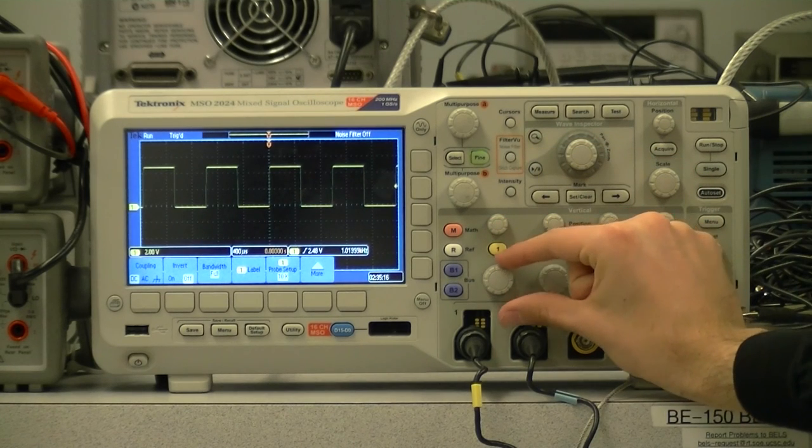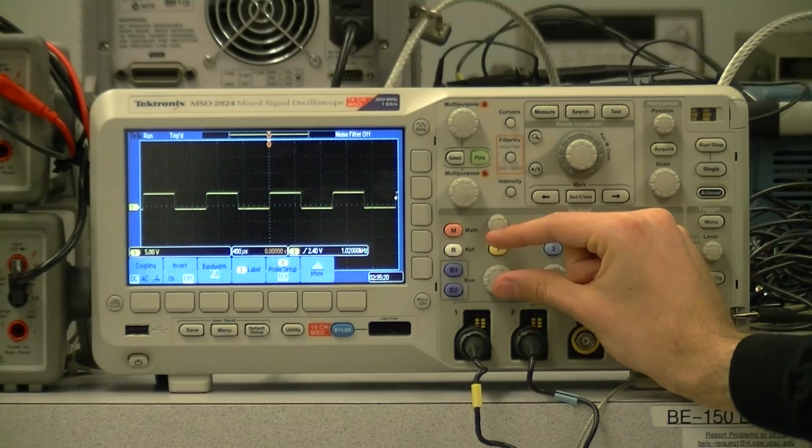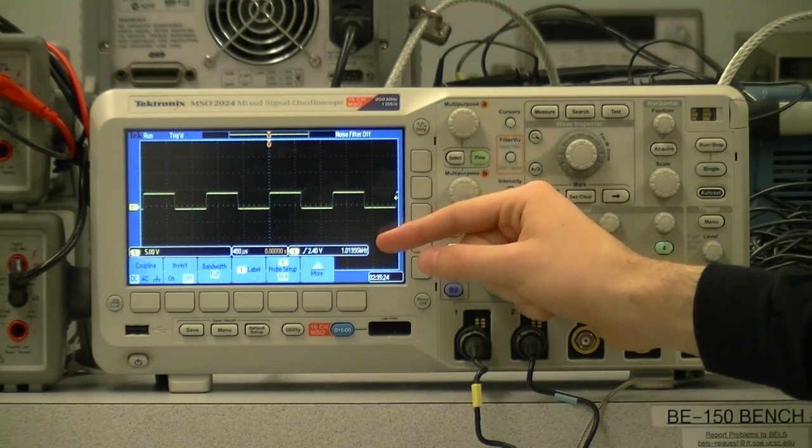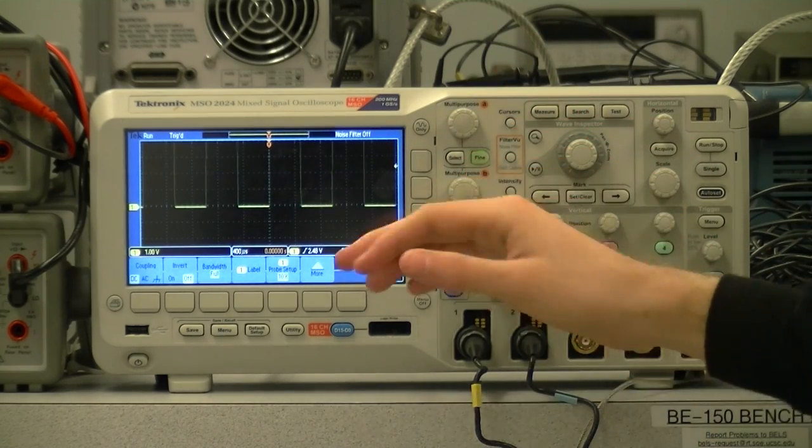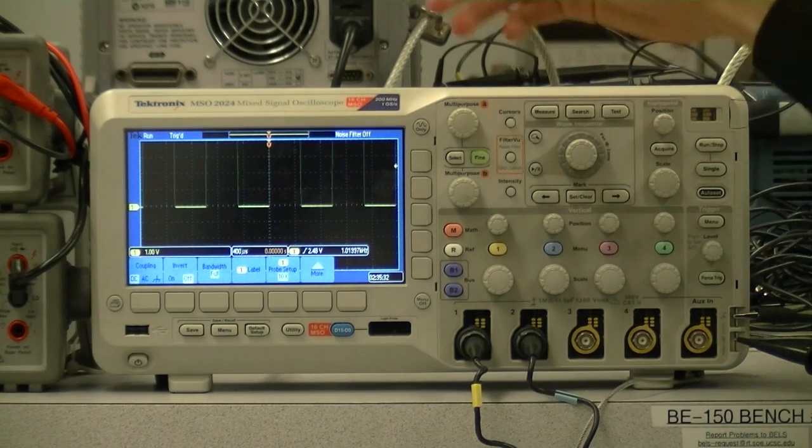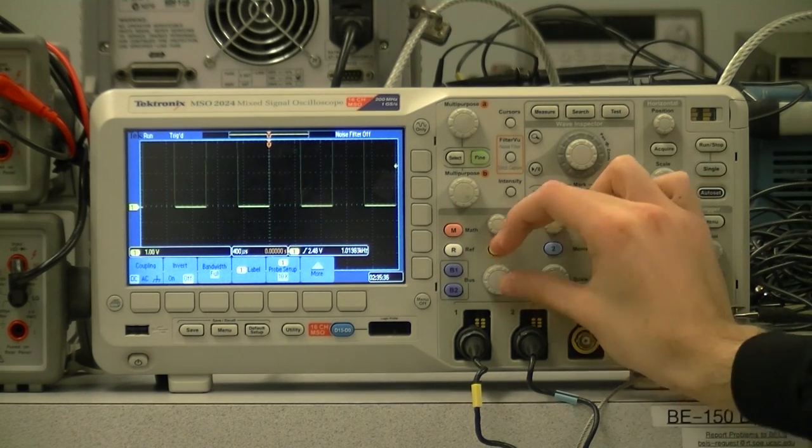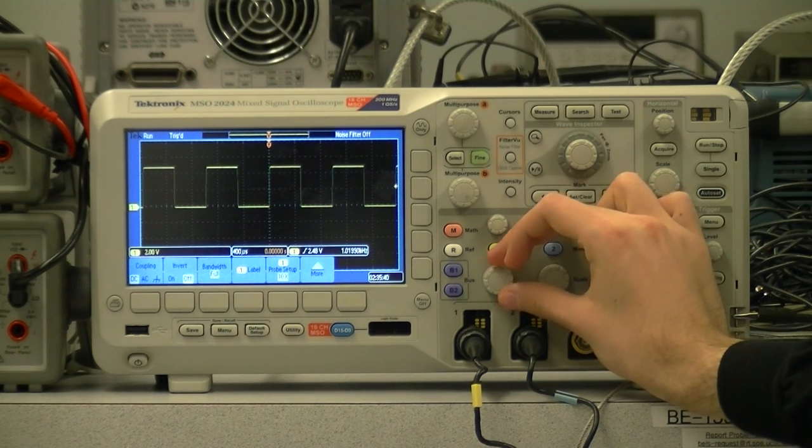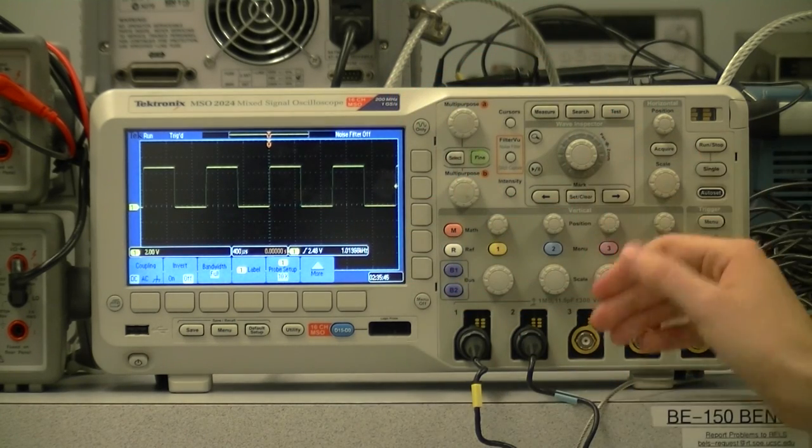We can adjust the size of the division with this lower, larger knob. For example, I change it here. It is now 5 volts per division. And we can see that the signal only goes up by one division. We can also move it in the other direction to 1 volt per division, at which point the signal goes off screen. You might want, when you have an off screen signal, to increase the number of volts per division, reducing the size of the signal, so that you can see all of it and know the overall range.